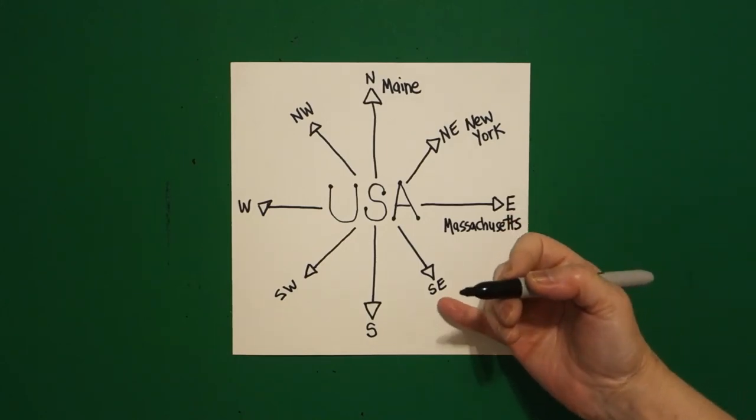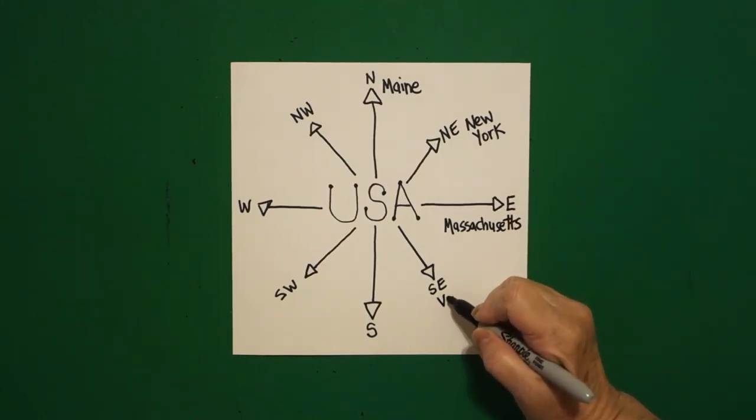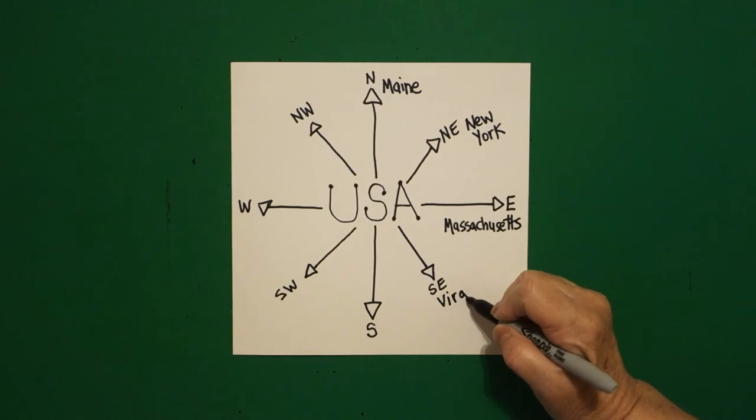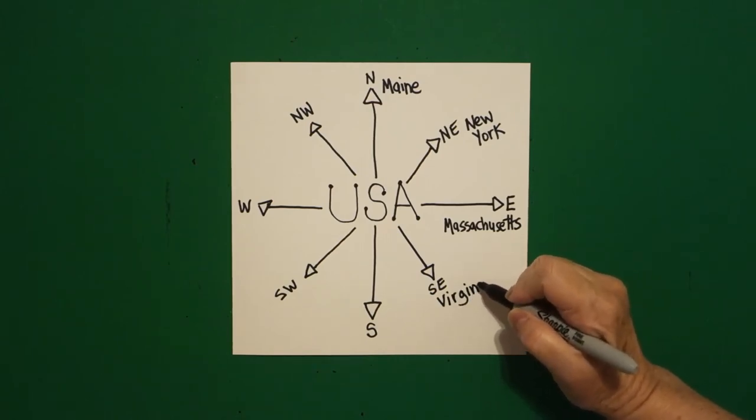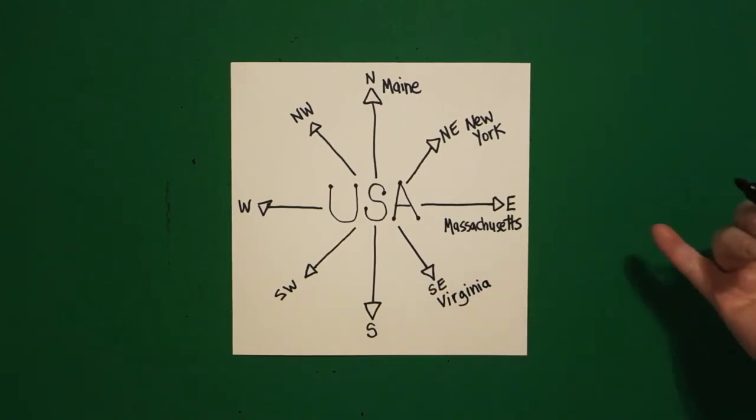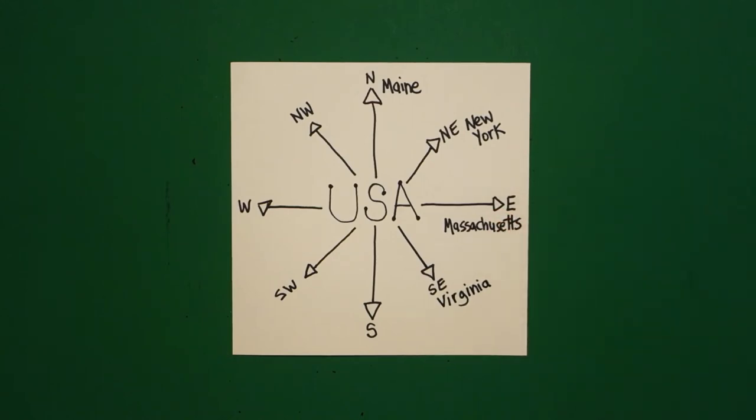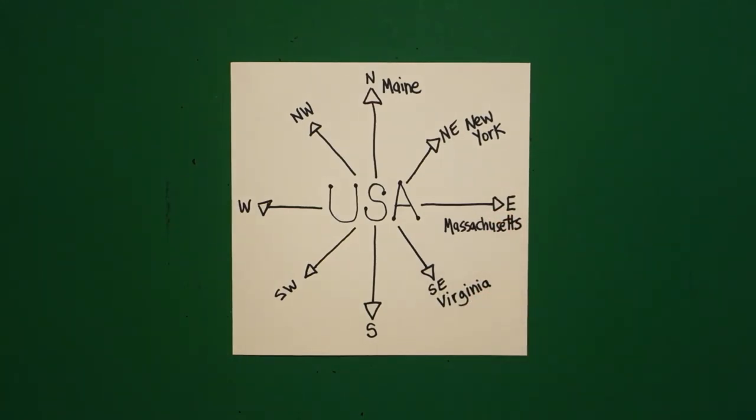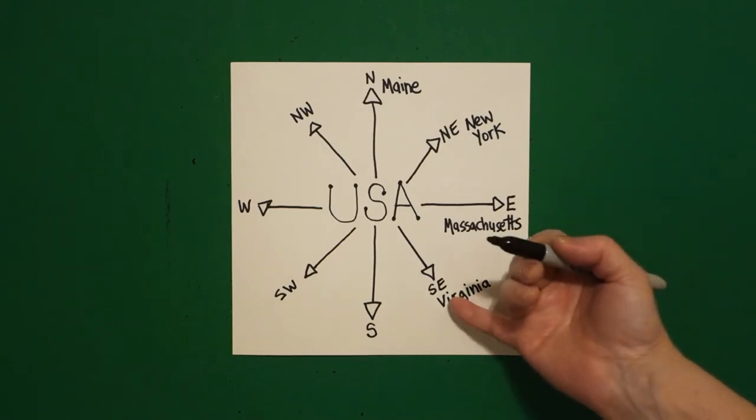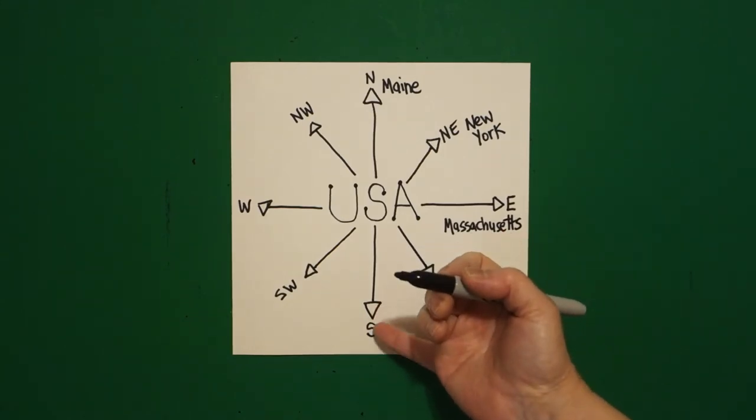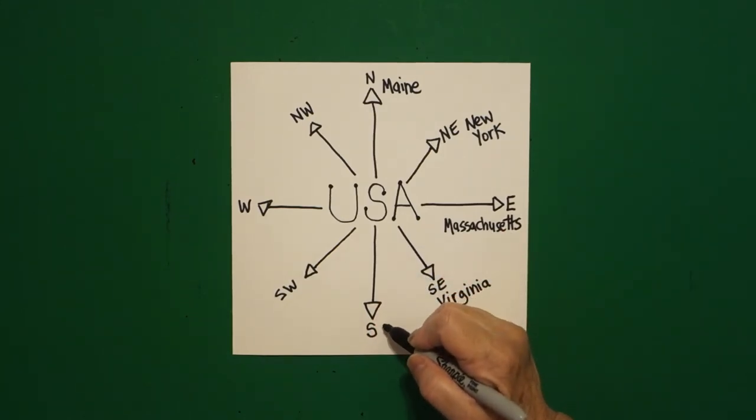Massachusetts. Come down to the south east, one of the states is Virginia, and I'm saying one of the states because if you look these up, you can Google them. There's more than just Massachusetts in the east. There are more states in the south east than just Virginia. I just chose these. I come down to the south, and this is going to be Alabama.